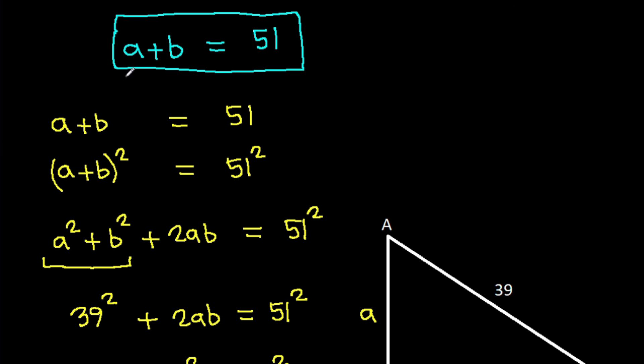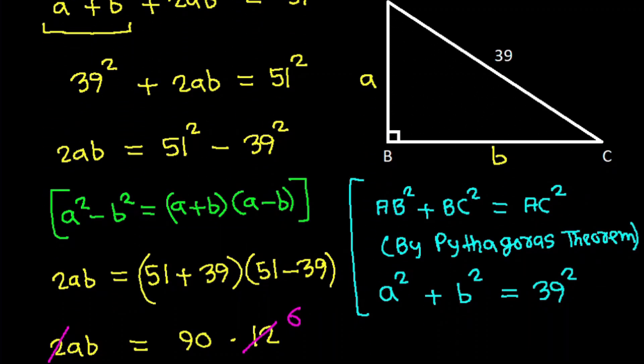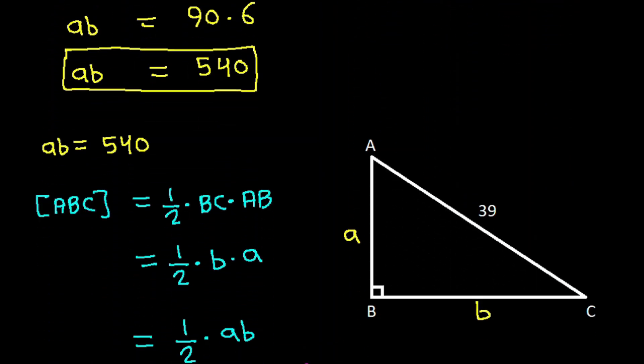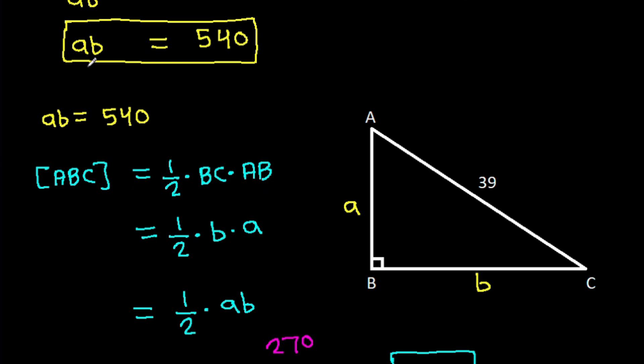And we have a plus b is 51 and AB is 540.